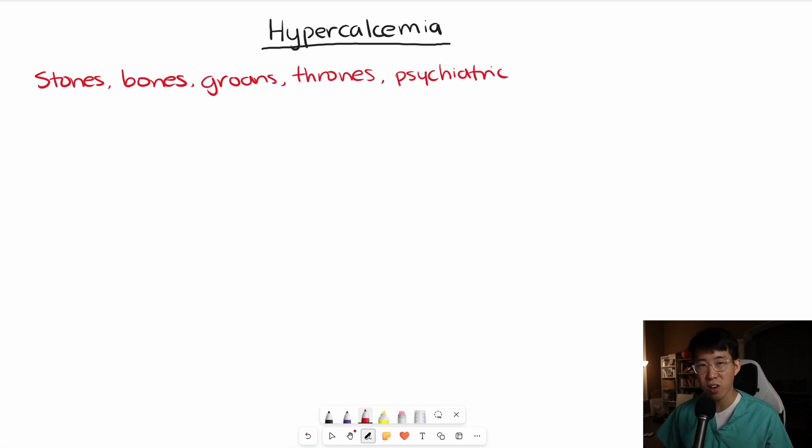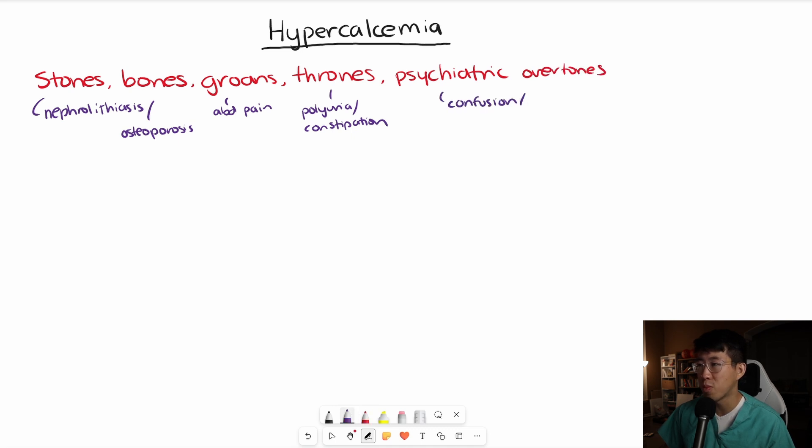And what do they stand for? Stones stands for nephrolithiasis or kidney stones. Bones stands for bone-related complications like osteoporosis and osteitis fibrosa cystica. Groans stands for abdominal pain. Thrones stands for polyuria and constipation, basically meaning you're going to be on the toilet all the time. And psychiatric overtones describes how patients can present with confusion or even coma, as well as anxiety and depression.